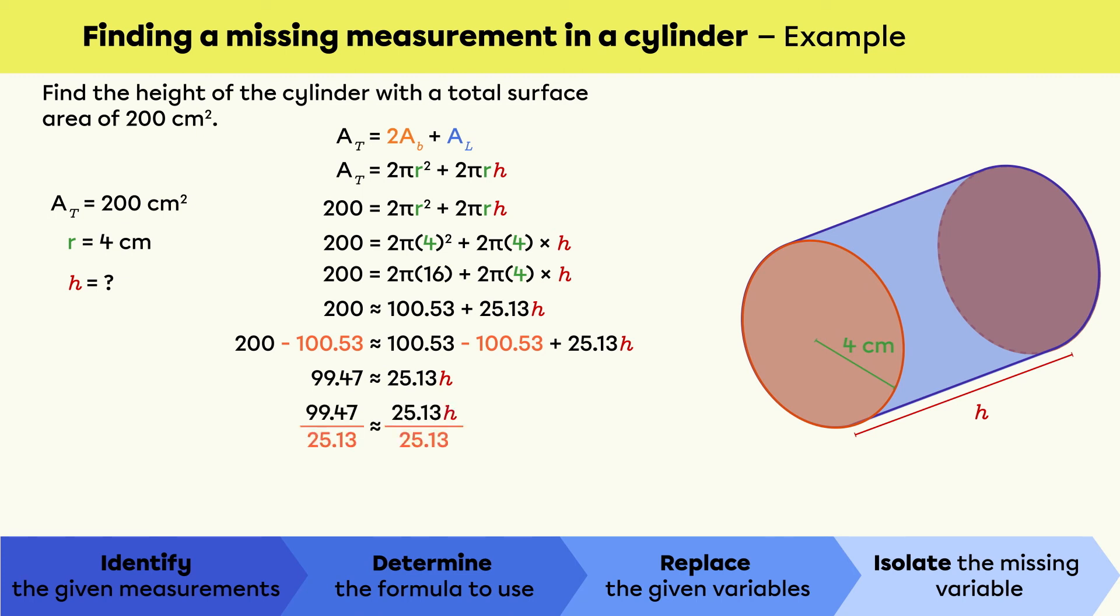Next, divide by 25.13 on both sides of the equal sign, since the inverse of multiplication is division. We find that h is approximately equal to 3.96.